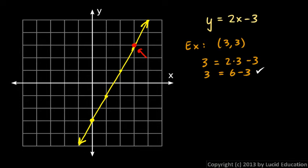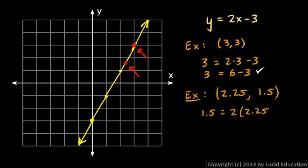Let's look at one other one that's not quite so obvious. Let's look at this point right here. That x coordinate is 2.25, and the y coordinate is 1.5. So we should be able to put in those values for x and y. Let's try that. Y is 1.5.